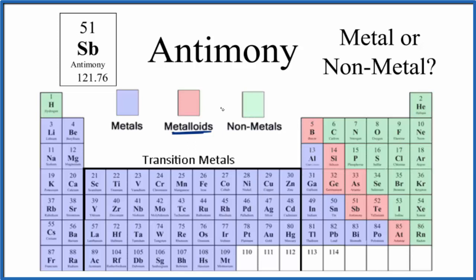If we find antimony, Sb, here on the periodic table, that's right here. Antimony, that's a metalloid.